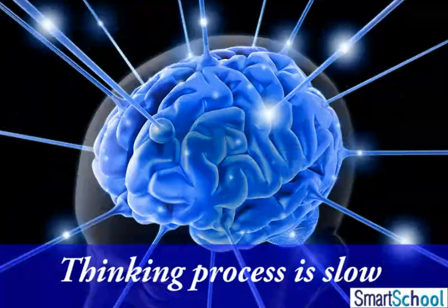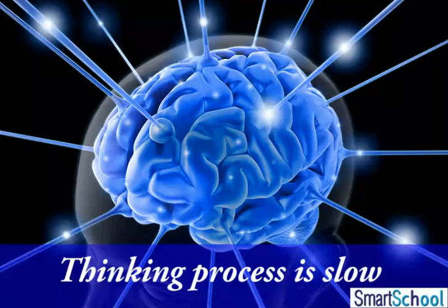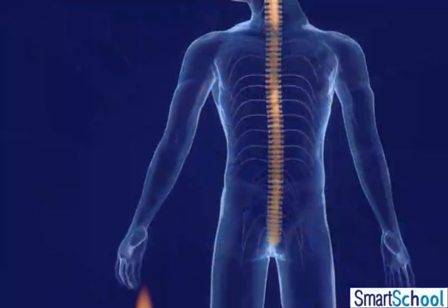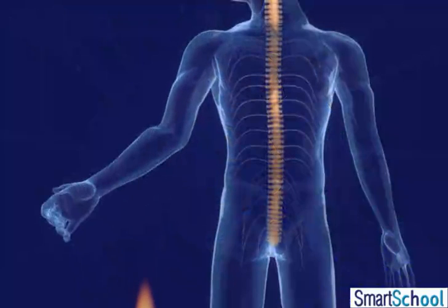Reflex arcs have evolved in animals because the thinking process of the brain is relatively slow. They have evolved as an efficient way of functioning in the absence of true thought processes.